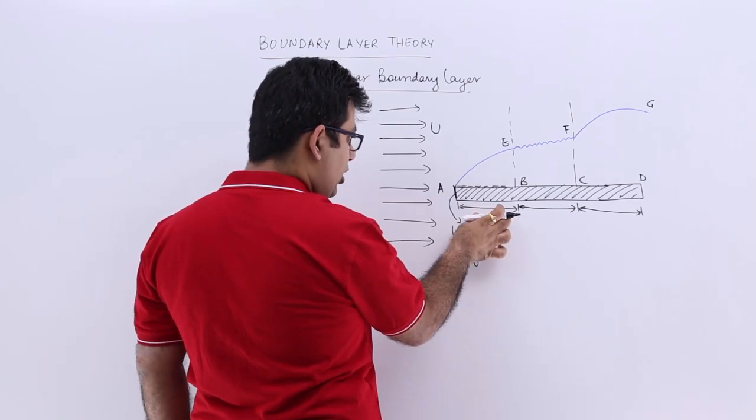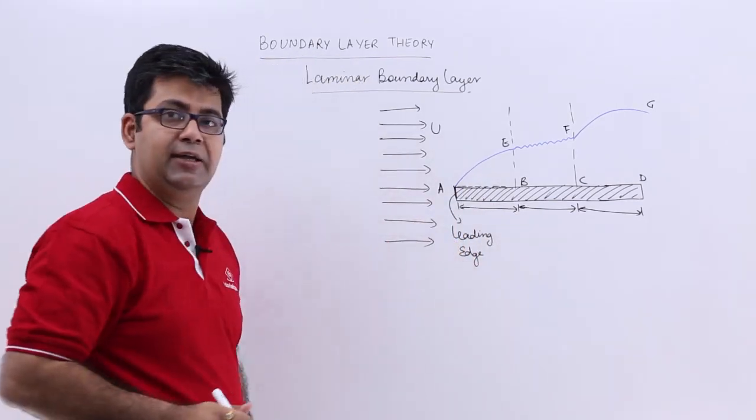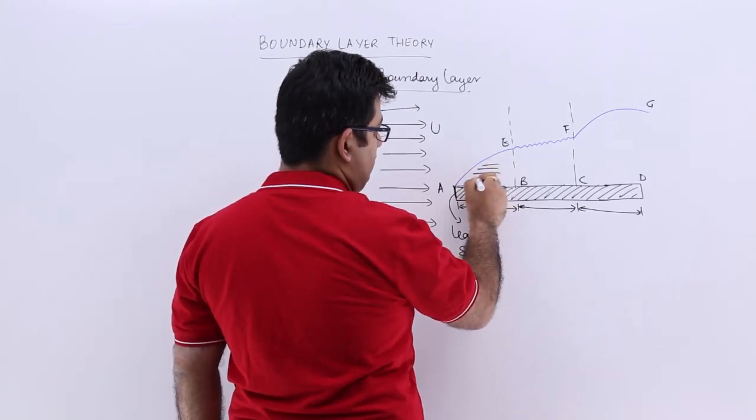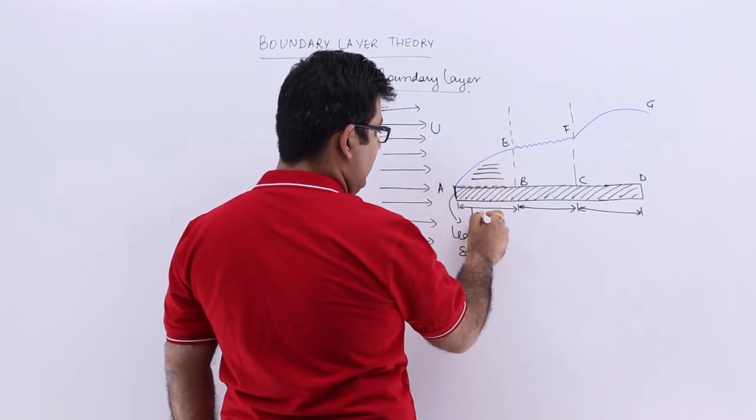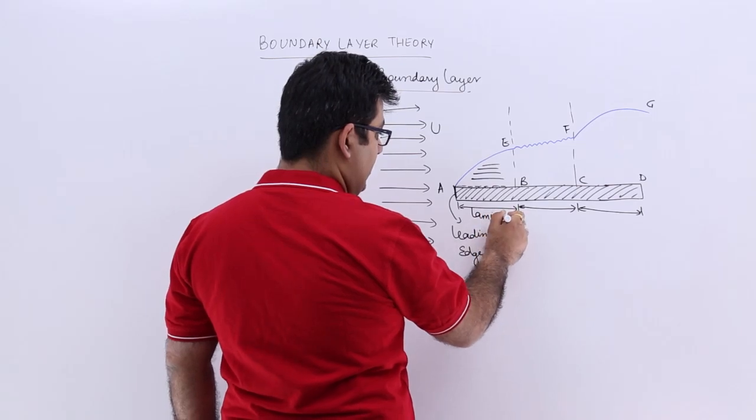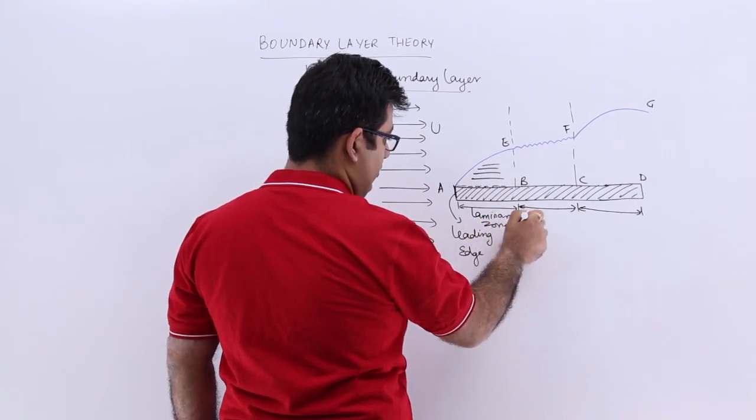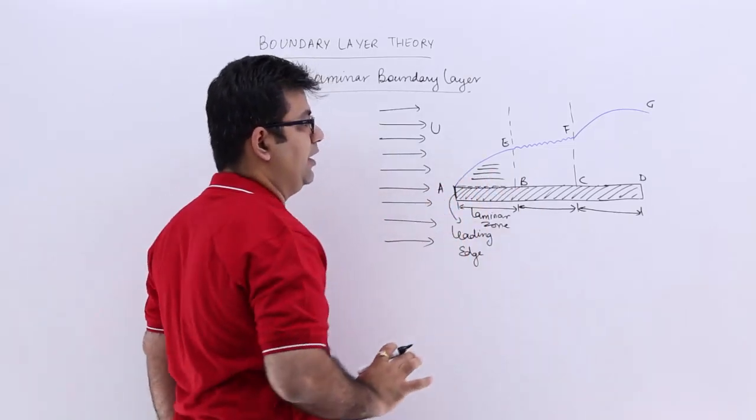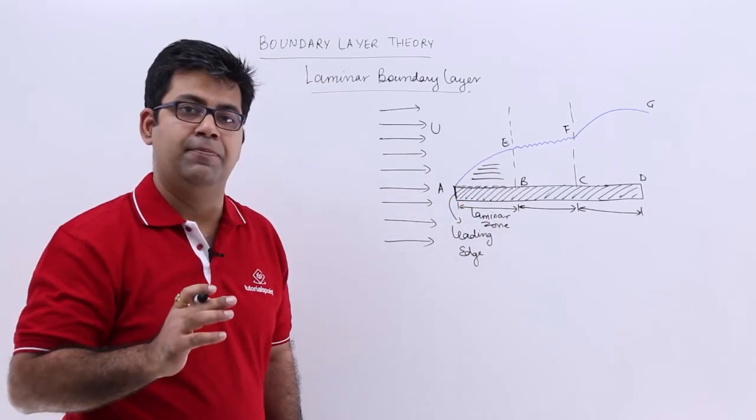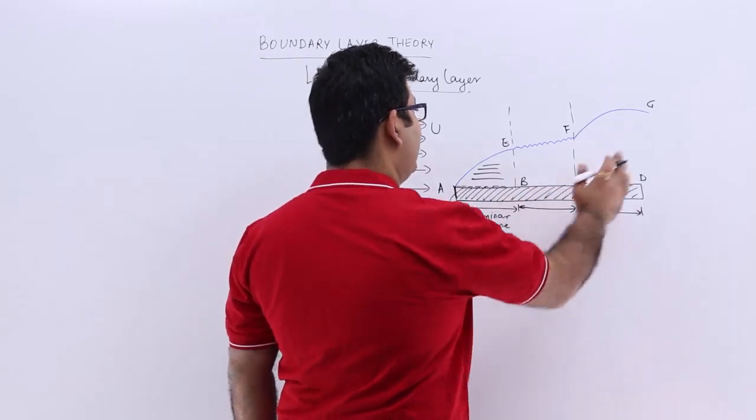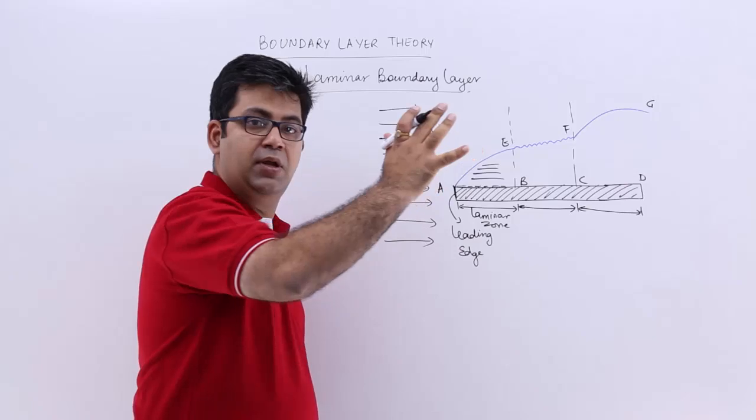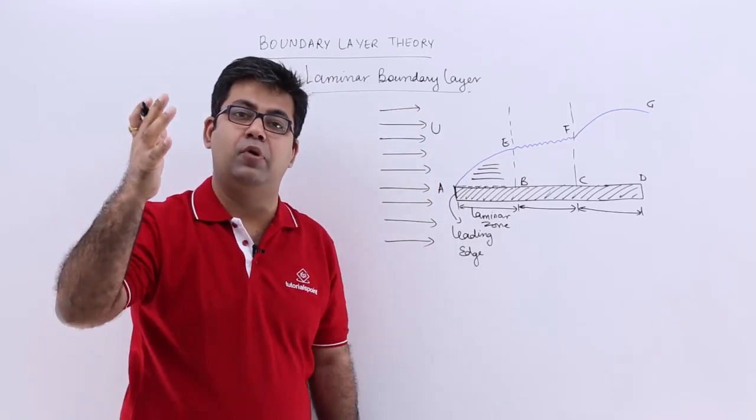The region of the boundary layer very close to the leading edge is laminar. This region from A to B is the laminar zone. The boundary layer size keeps growing as you start going away from the leading edge.